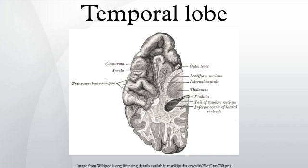The temporal lobes are involved in the retention of visual memories, processing sensory input, comprehending language, storing new memories, emotion, and deriving meaning.